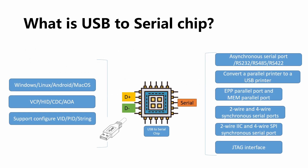The USB-to-serial chip has one main function, which is to allow for easier development by giving the developer access to serial peripheral communication while having a USB connection. The chip contains the D-plus and D-minus pins for USB communication, and then a translation layer in between for the serial communication. Using this approach, you can connect your host computer through a WCH USB-to-serial chip to make an asynchronous serial port, convert a parallel printer to a USB printer, make two-wire and four-wire synchronous serial ports, and even implement a JTAG interface.